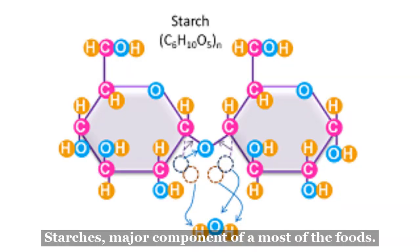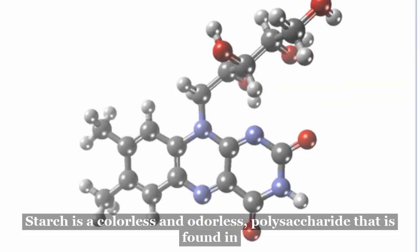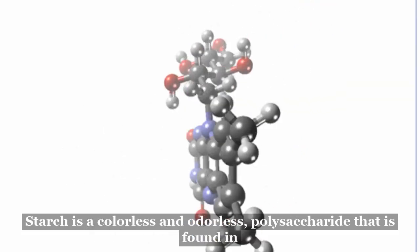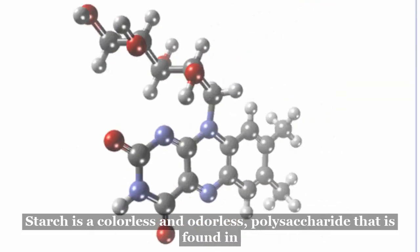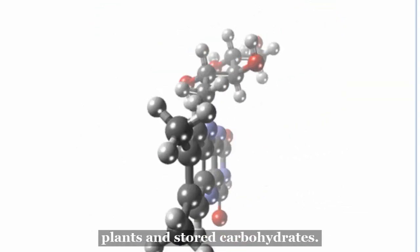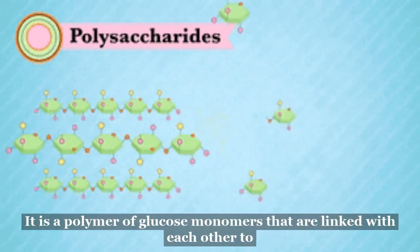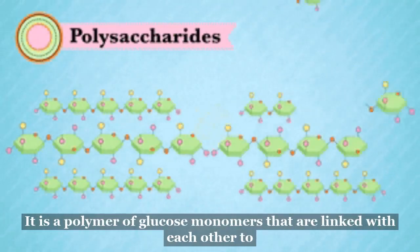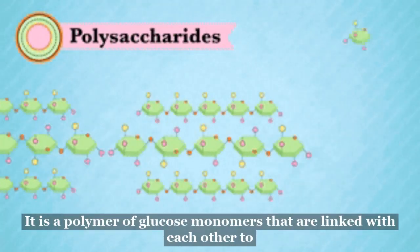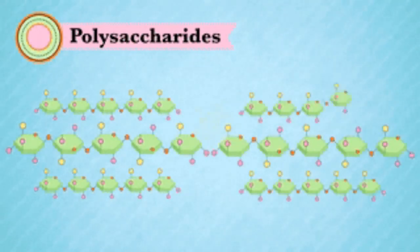Starch is a major component of most foods. It is a colorless and odorless polysaccharide that is found in plants as stored carbohydrates. It is a polymer of glucose monomers that are linked with each other to form a polysaccharide.